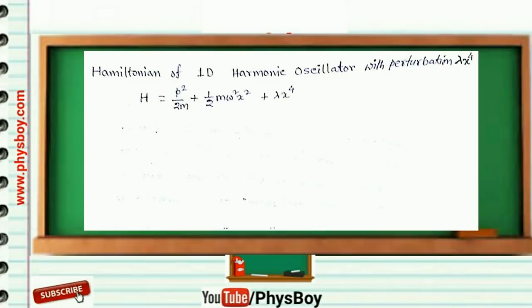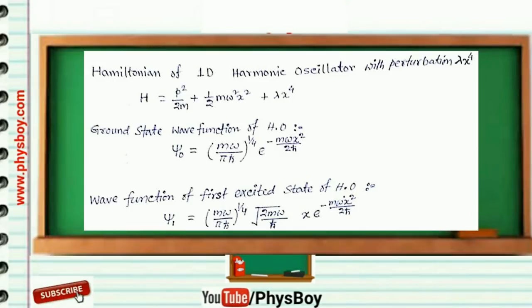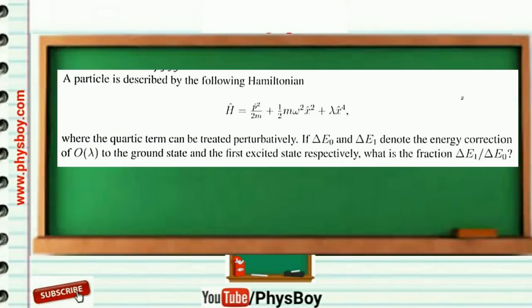The ground state wave function of the harmonic oscillator is written as psi naught, which is equal to (m omega by pi h-bar) to the power one-fourth, times e to the power minus (m omega x squared by 2 h-bar). The wave function of the first excited state is written as psi 1, which is equal to (m omega by pi h-bar) to the power one-fourth, times the square root of (2m omega by h-bar), times x, times e to the power minus (m omega x squared by 2 h-bar).